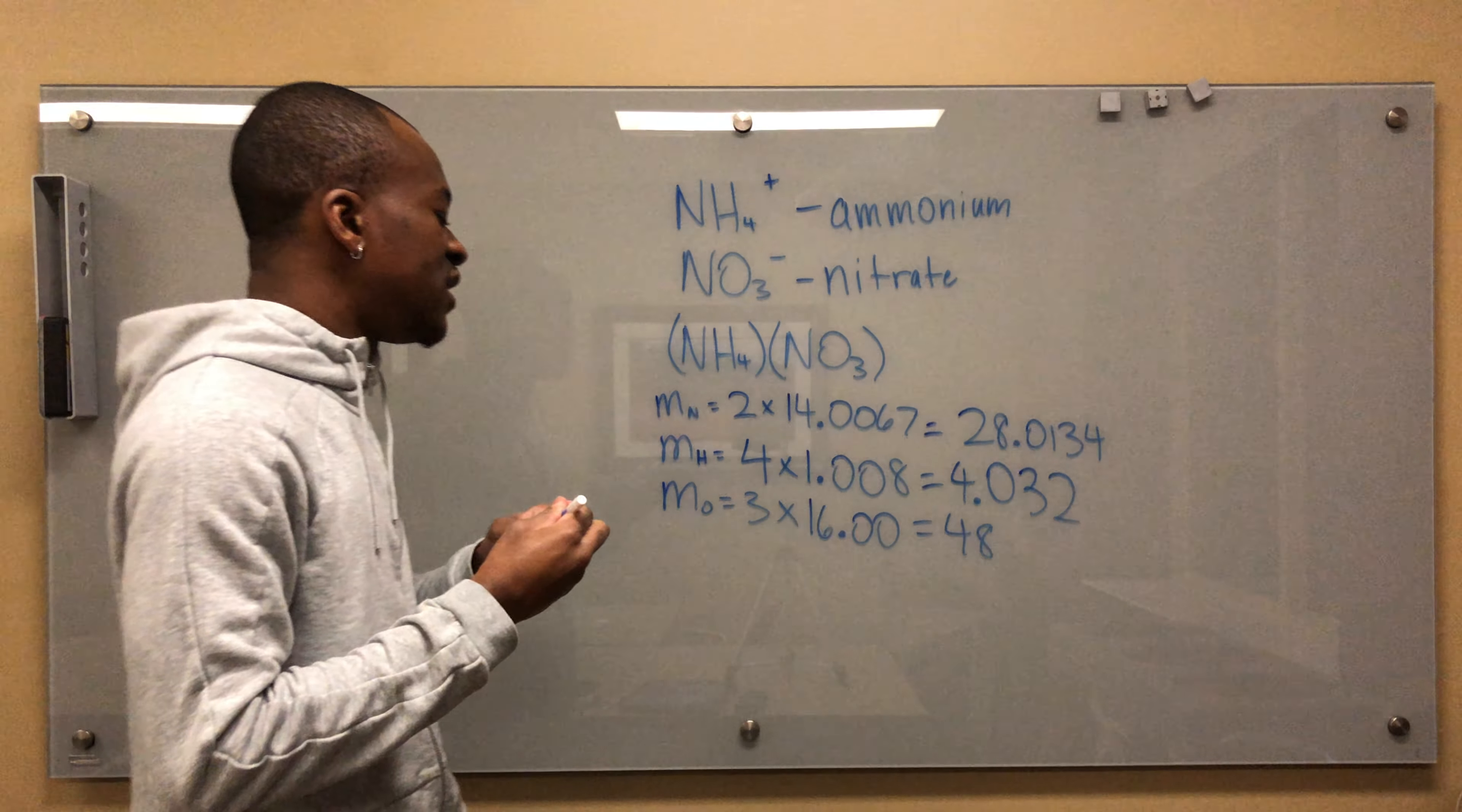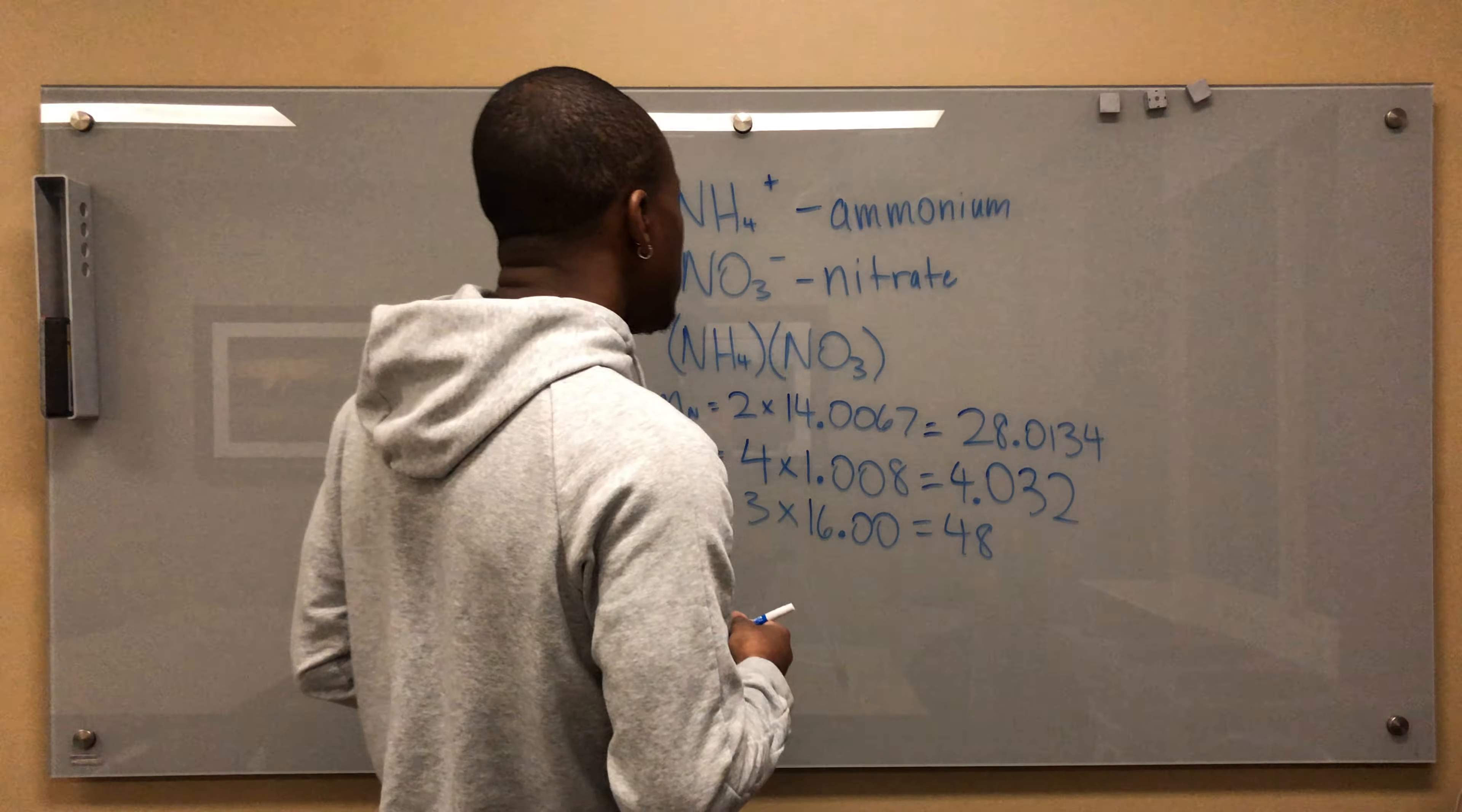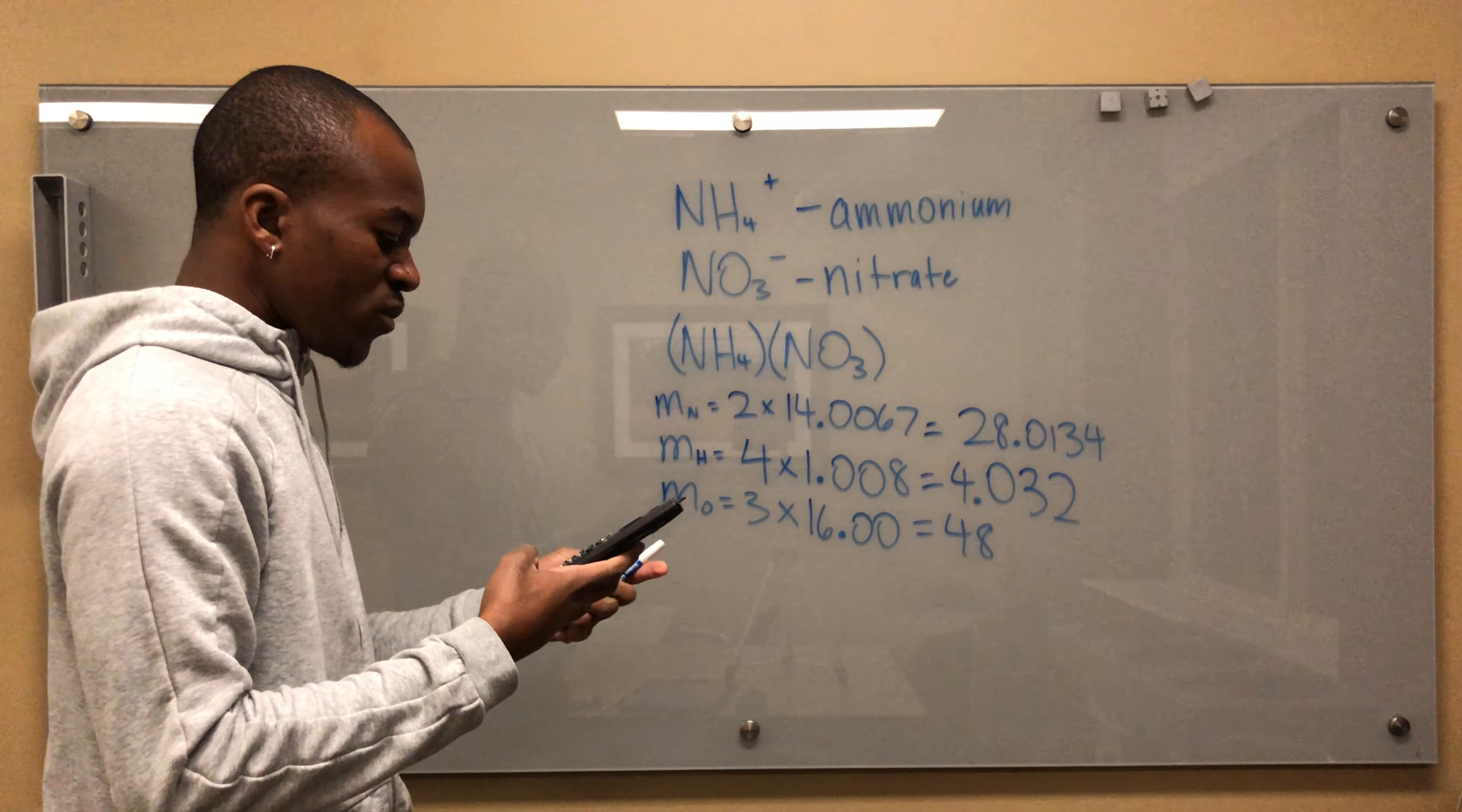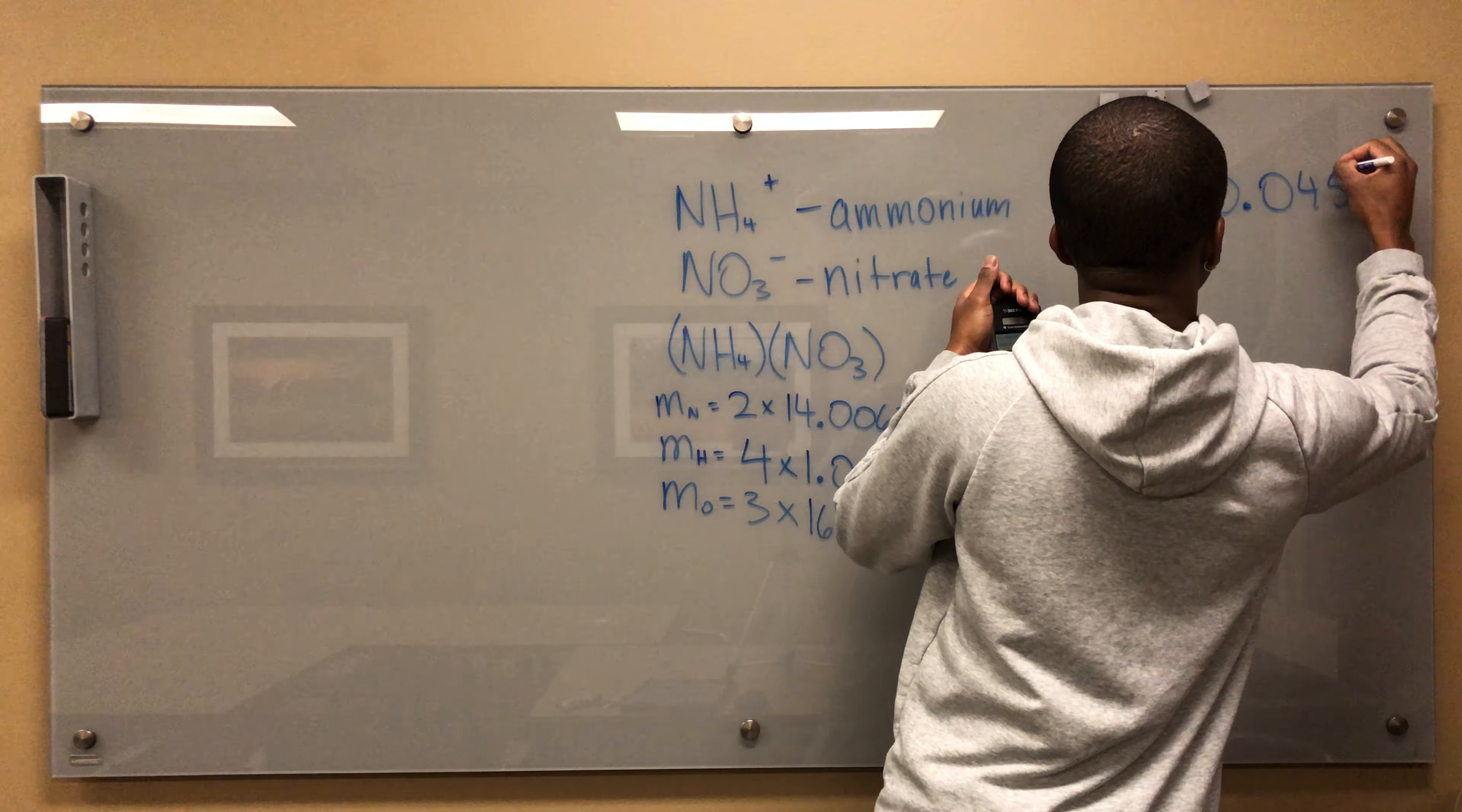Now I want to add all of these up. Let's look here first - we can see this number is the highest, so my mass percentage of oxygen I'm going to expect to be the highest. This is the second highest, this is third highest. I'm going to add all these numbers up and get my total mass. My total mass equals 80.0454.